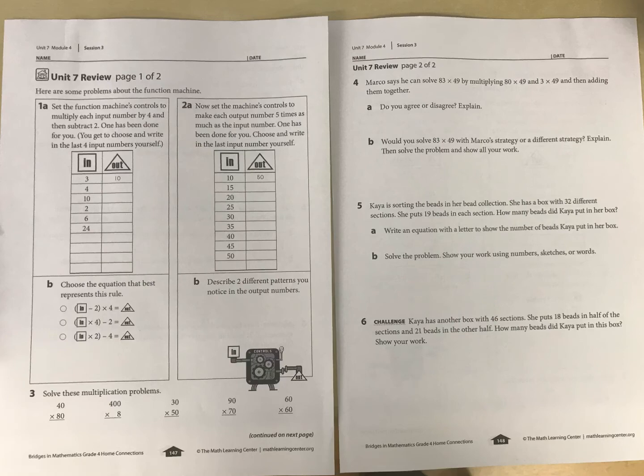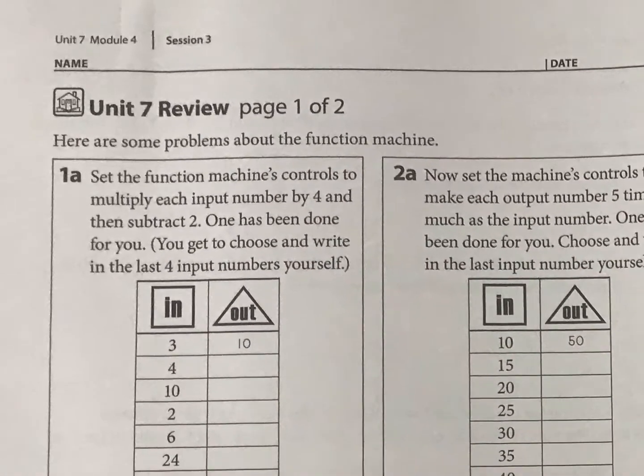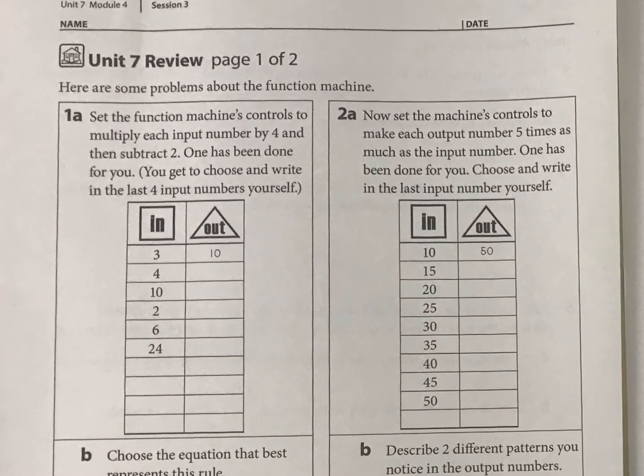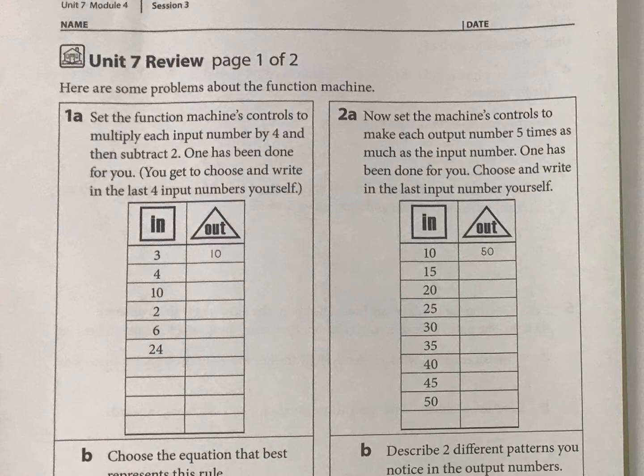Okay, let's look at Unit 7 Review, which is math fourth grade. First we have something called a function machine. It might look confusing at first, but let's just read and try to figure out what it says. For each input, or in, what you do is multiply by 4 and then subtract 2.